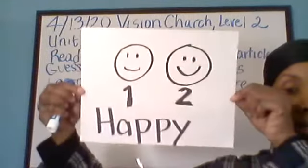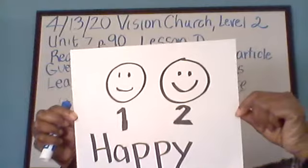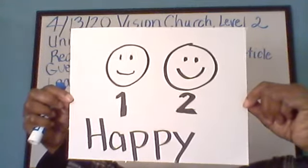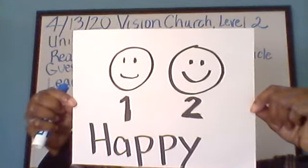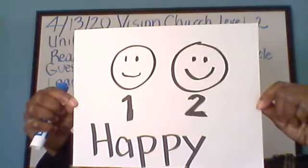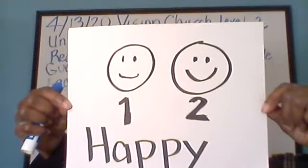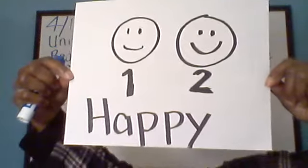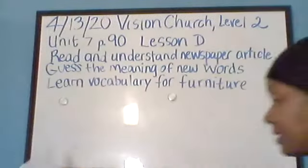Second picture — the adjective is happy. You've got two faces there. Which face is happy? Which face is happier? Which face is the happiest? That's right — which face is happier? Because that is the comparative form of the adjective happy and we're comparing two faces.